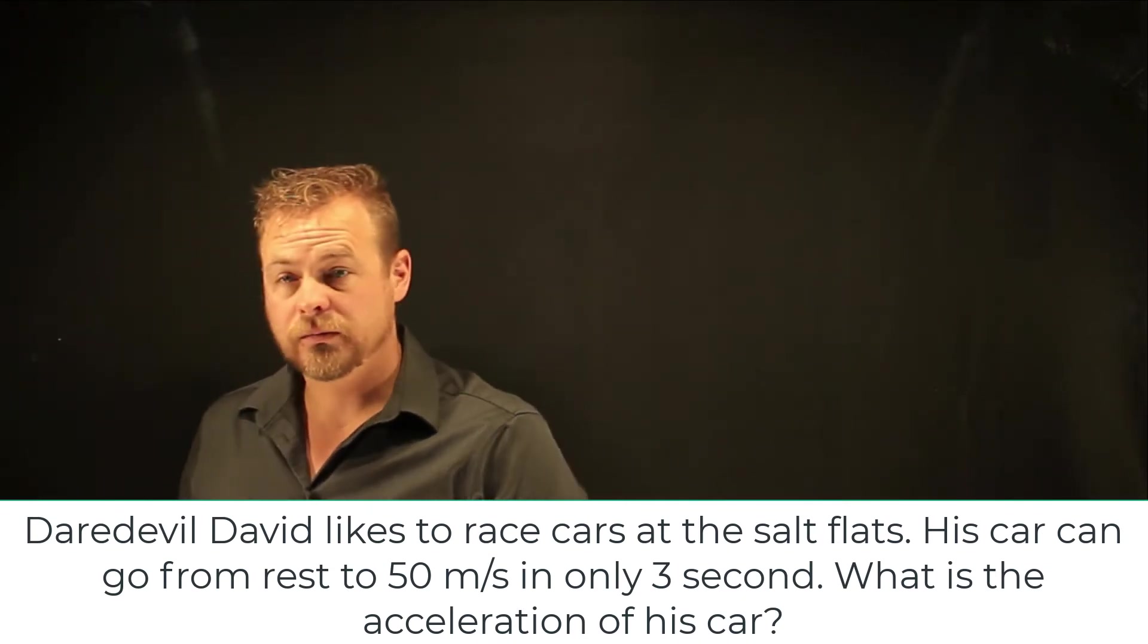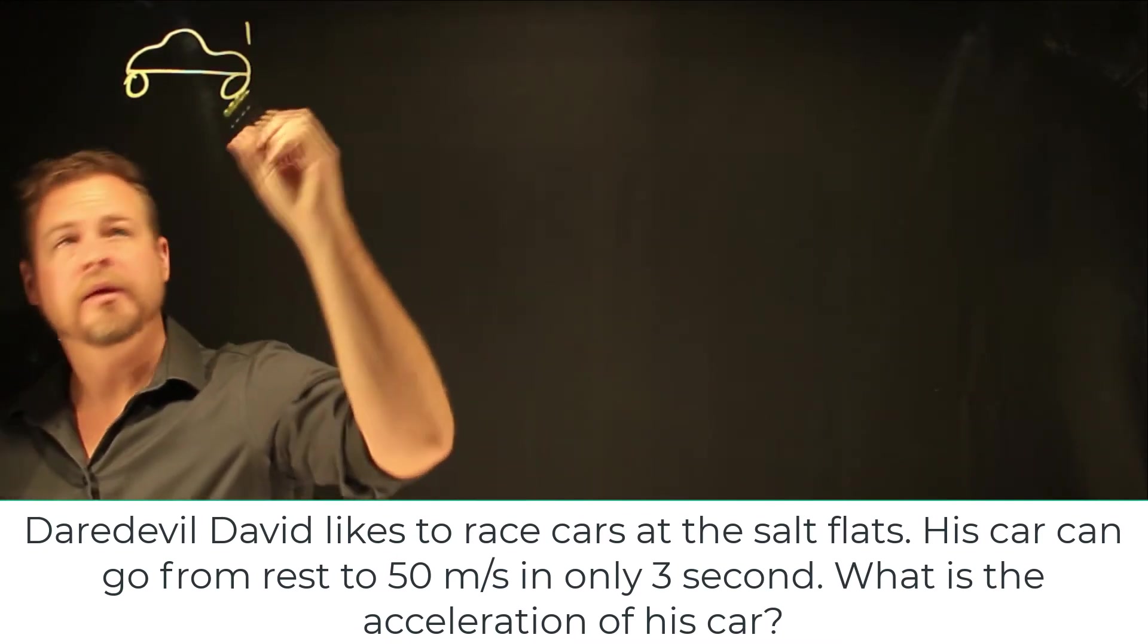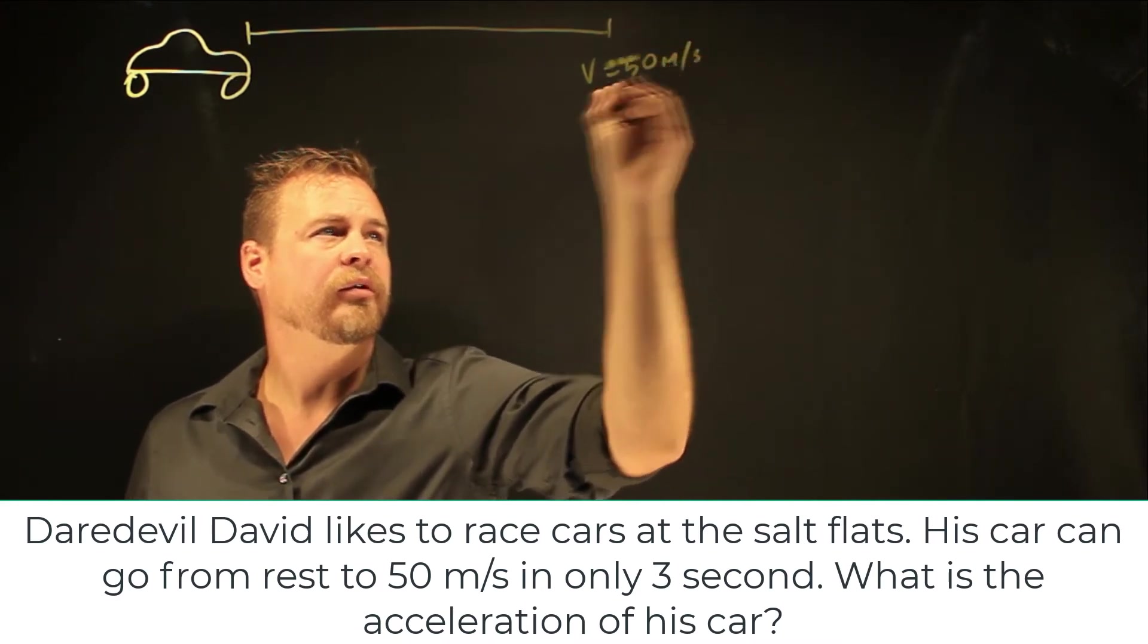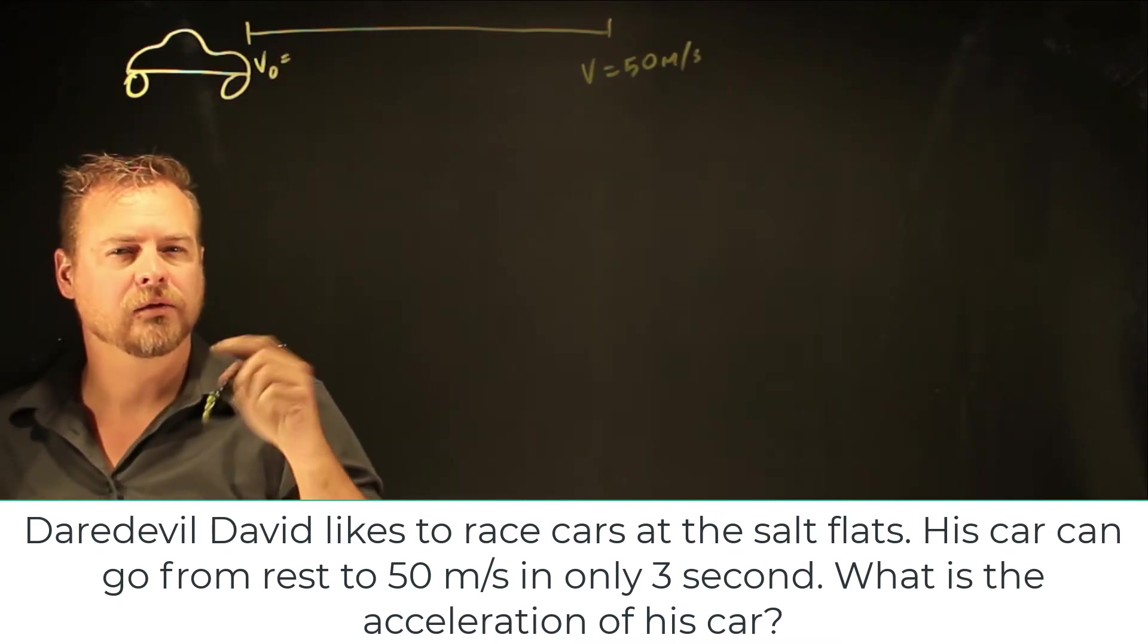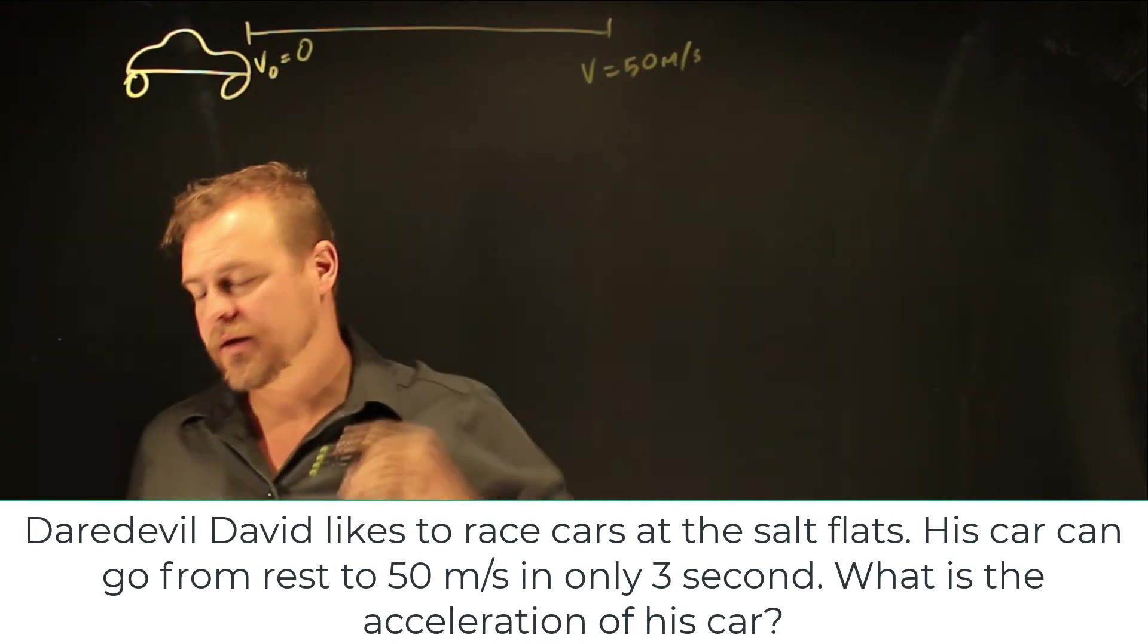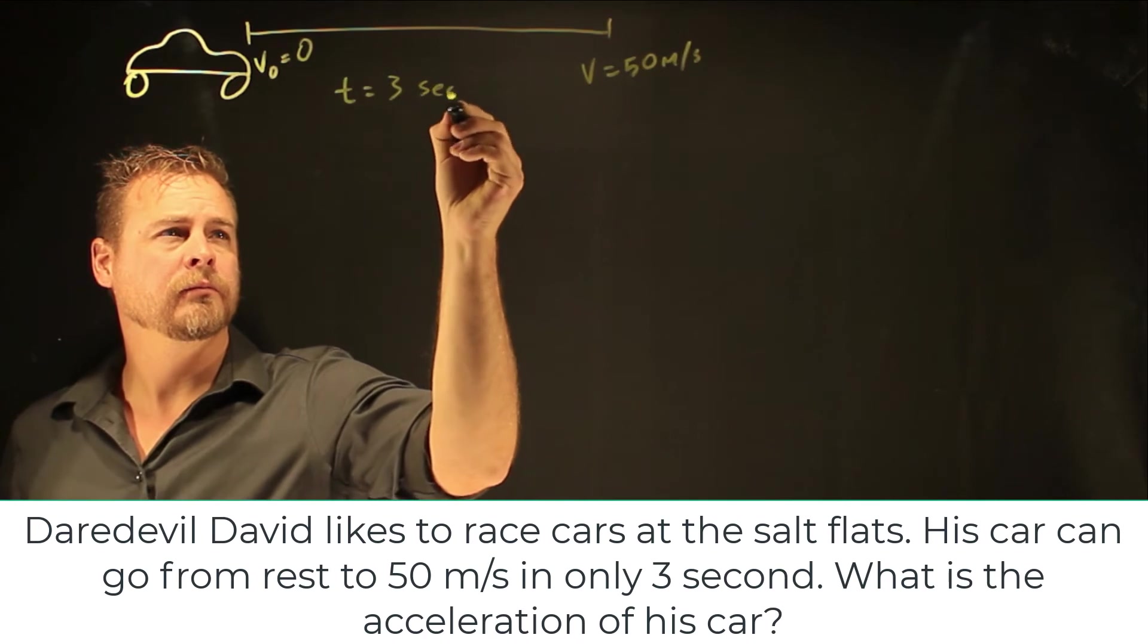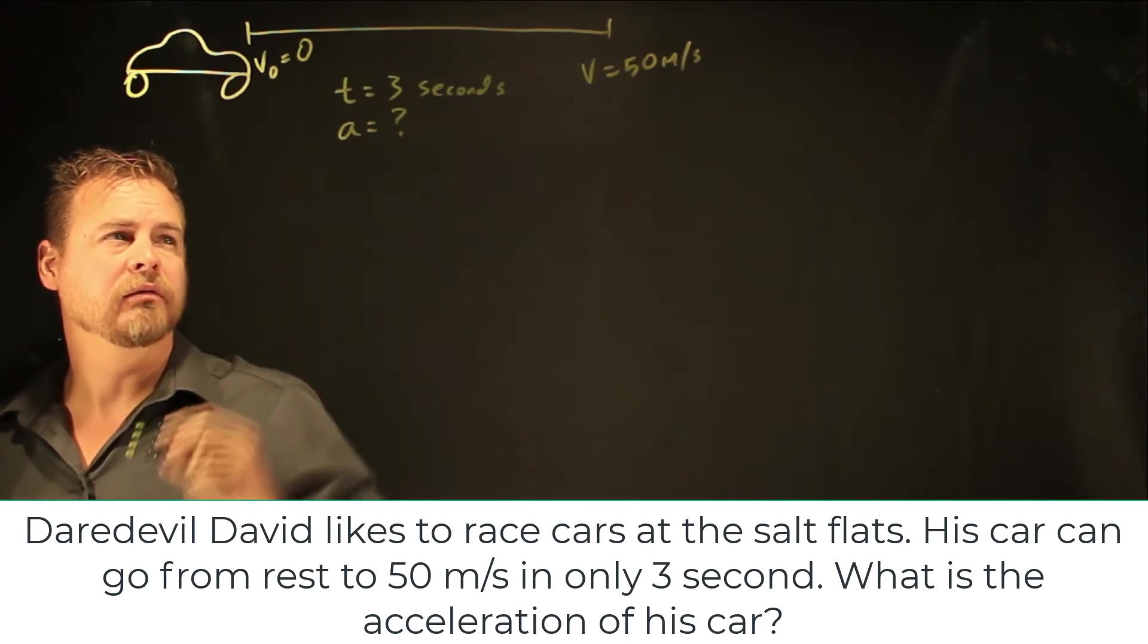Okay, so draw a picture. His car goes from rest to 50 meters per second. And so my velocity is 50 meters per second. And my initial velocity, rest, you have to understand that rest is zero. So it's implied that he starts from a velocity of zero. And then he increases his speed to 50 meters per second. And they give us a time increment of three seconds. What is the acceleration of his car?